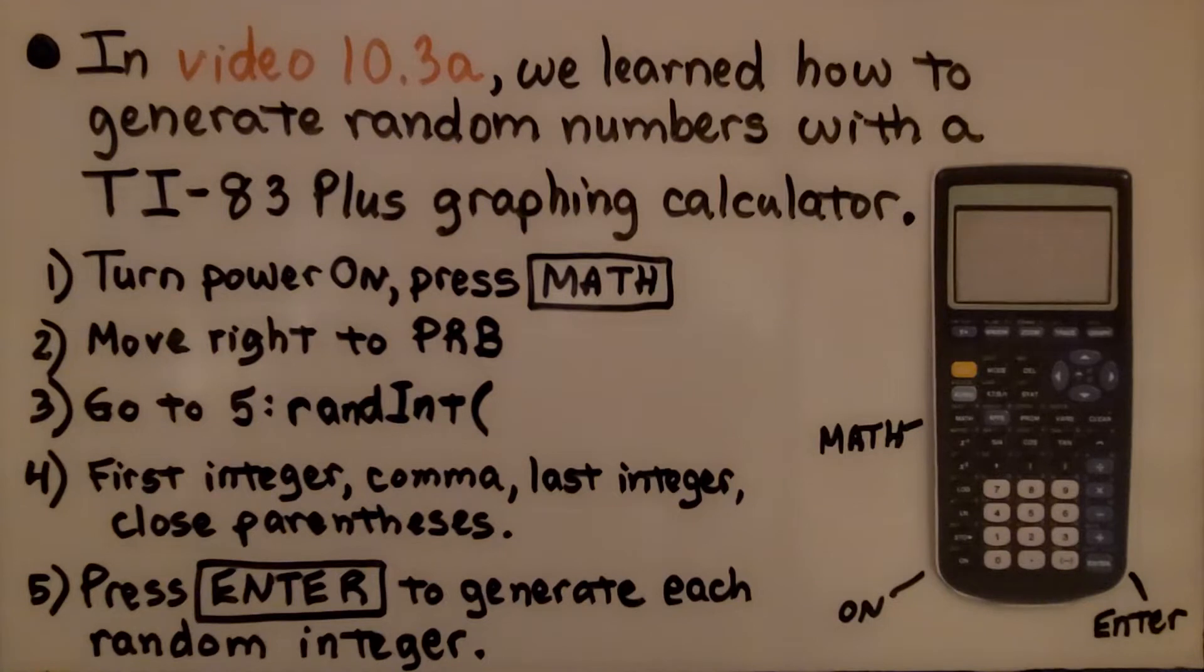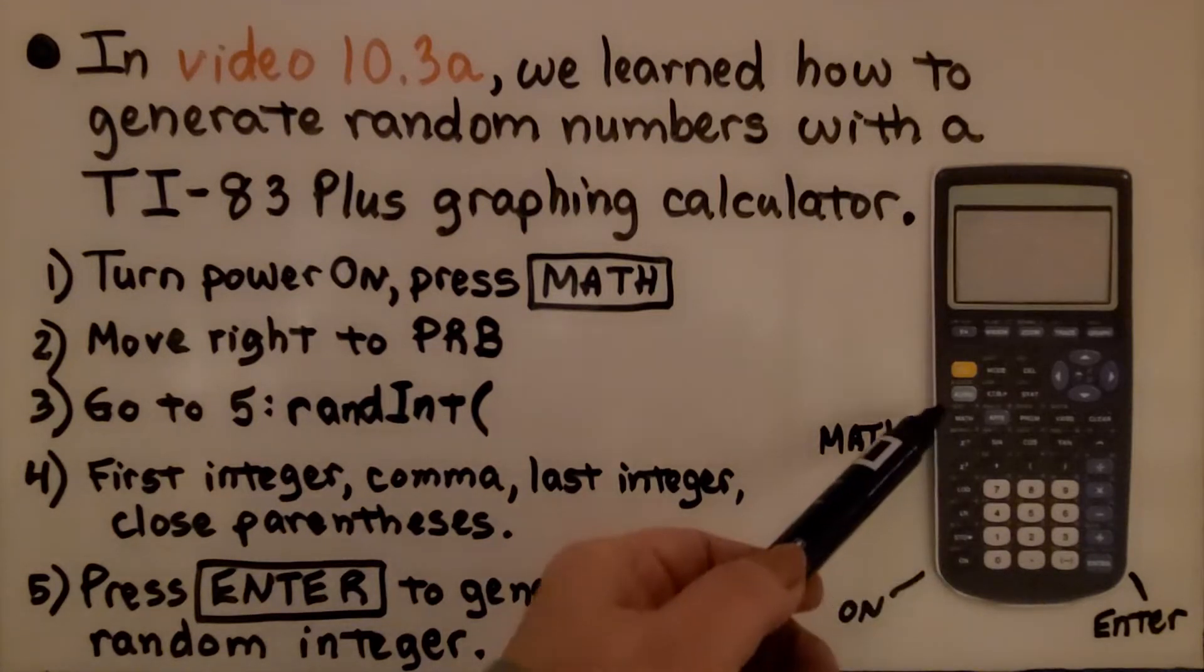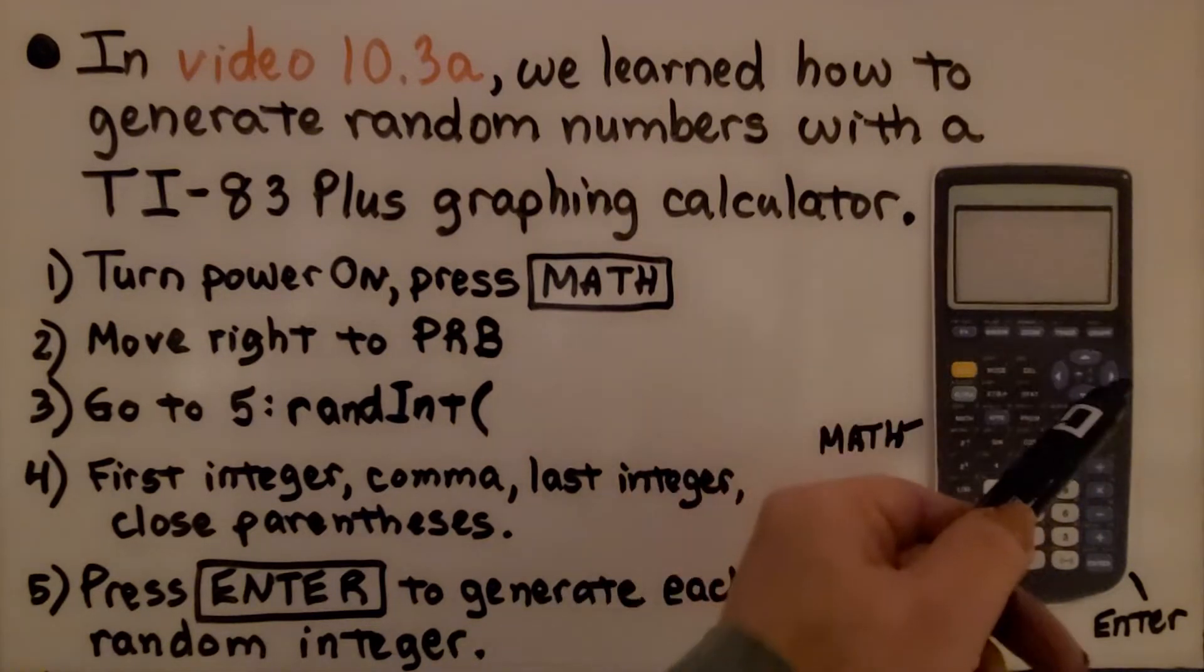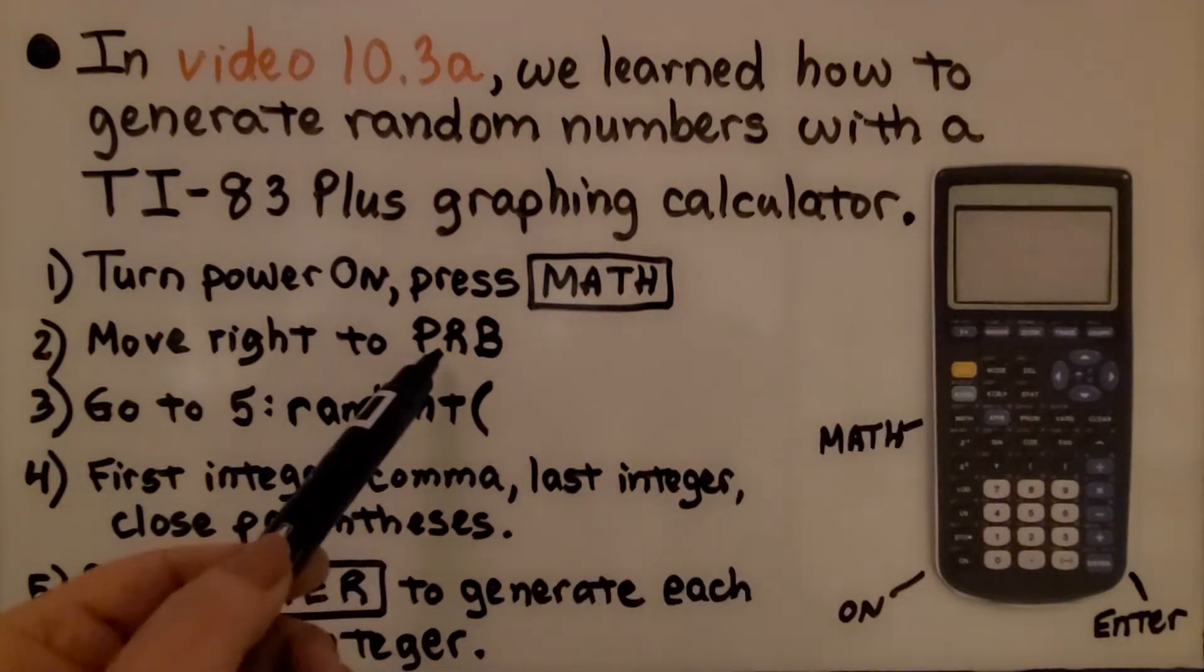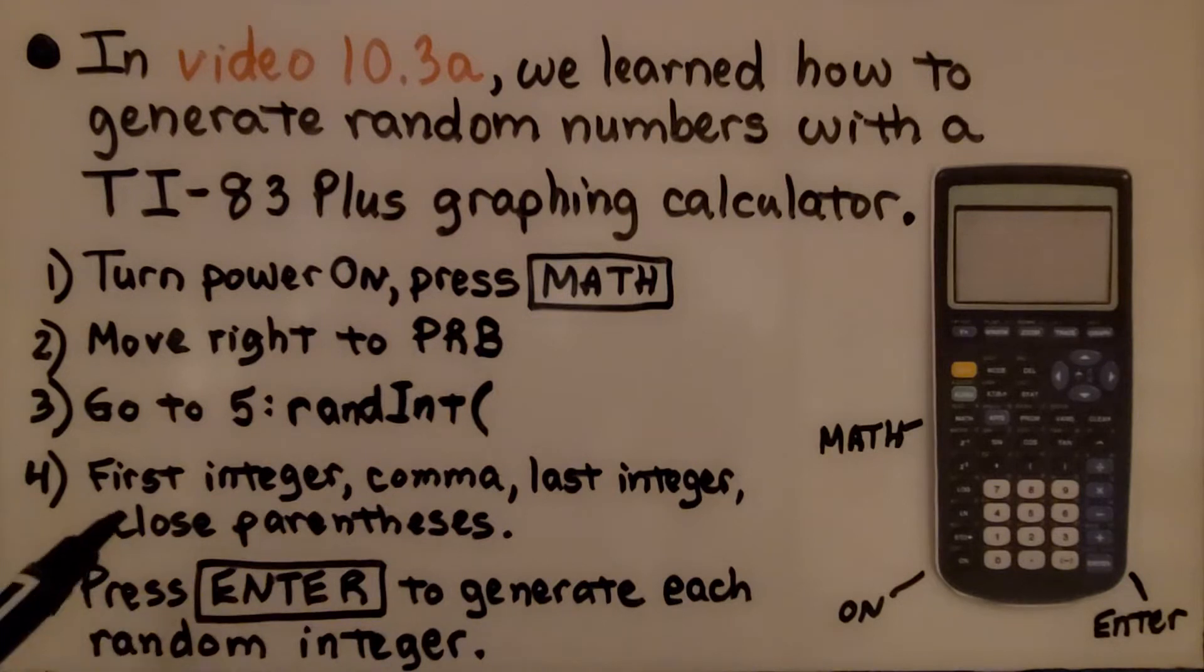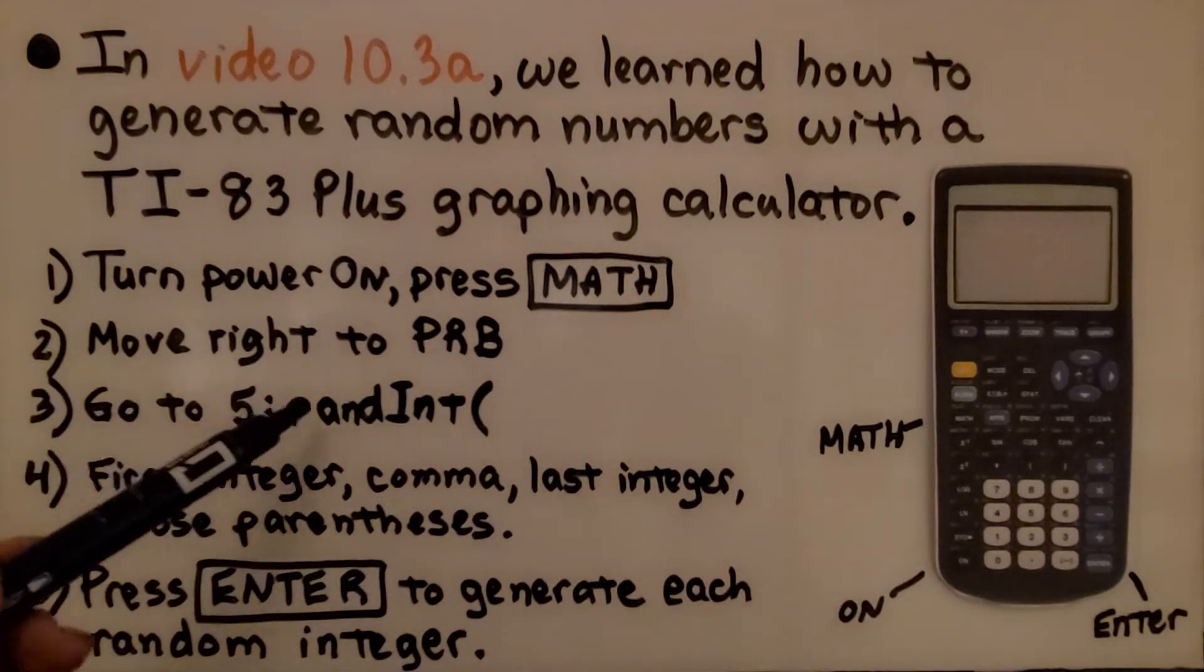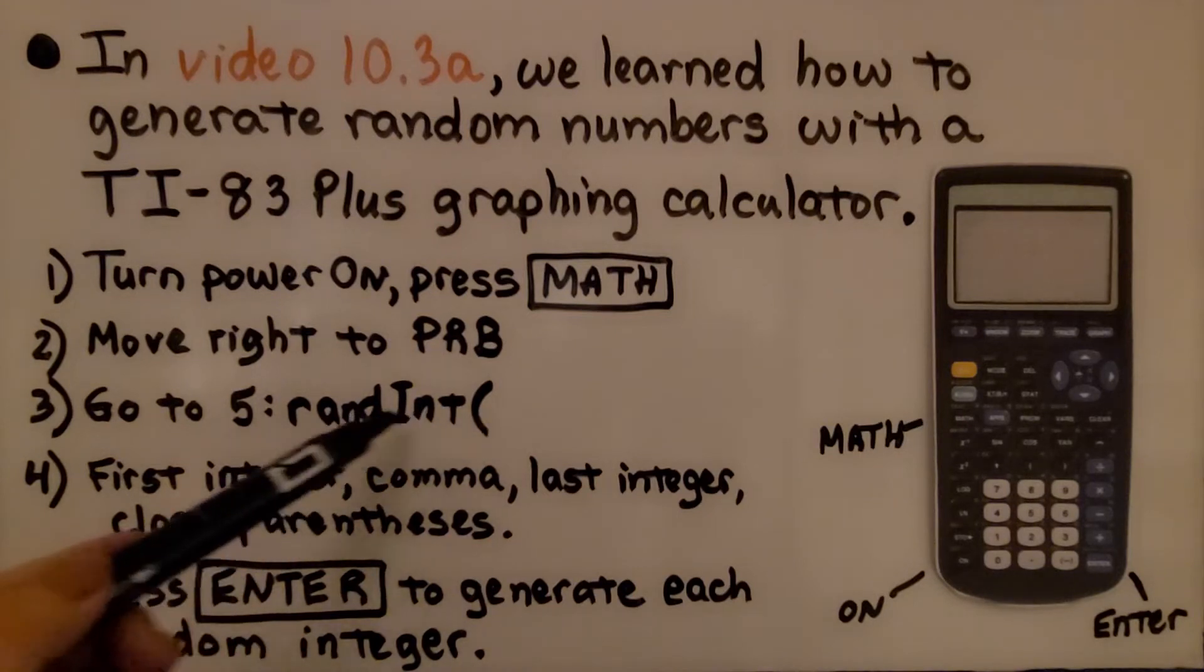That's Texas Instruments. The first thing we do is turn the power on and press Math. Then, on the options along the top, we're going to scroll to the far right to PRB. Then, we can scroll down or press 5 to go to randint, open parentheses for random integer.